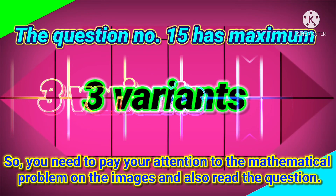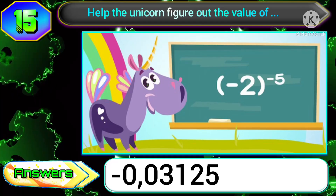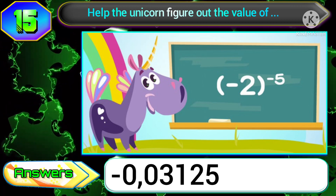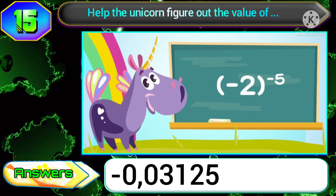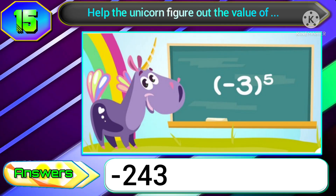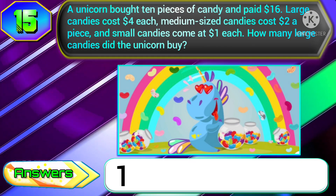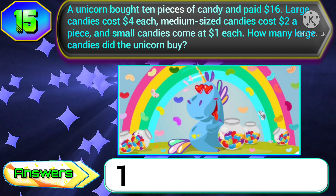Question number fifteen has maximum three variants, so you need to pay attention to the mathematical problem on the images and also read the question. In variant one, if they want the answer of minus two to the power of minus five, the answer will be minus 0.03125. In variant two, if they ask minus three to the power of what equals a certain value, you need to choose the option minus 243. In variant three, if the question starts with: a unicorn bought 10 pieces of candy and paid 16 dollars — the answer will be 1.